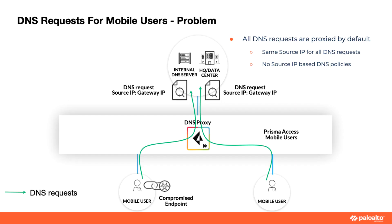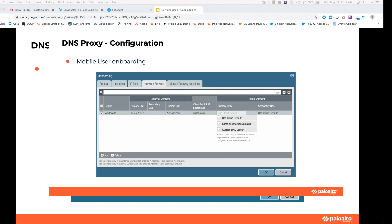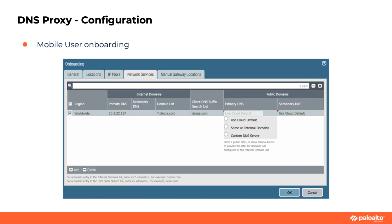DNS enhancements for mobile users. By default, Prisma Access will proxy all DNS requests for mobile users, which means the source IP of the DNS request will be the IP address of the gateway to which the user is connected. This prevents customers from implementing source IP-based DNS policies or identifying a compromised endpoint based on the source IP of the DNS request. When a customer sends all their DNS requests to their internal DNS server, Prisma Access does not act as a DNS proxy, so the DNS request sent would have the source IP of the mobile user's endpoint. This enables customers to implement source IP-based DNS policies or perform DNS-based forensics to identify a compromised endpoint. To disable the DNS proxy, set the DNS server to the same as internal domains.